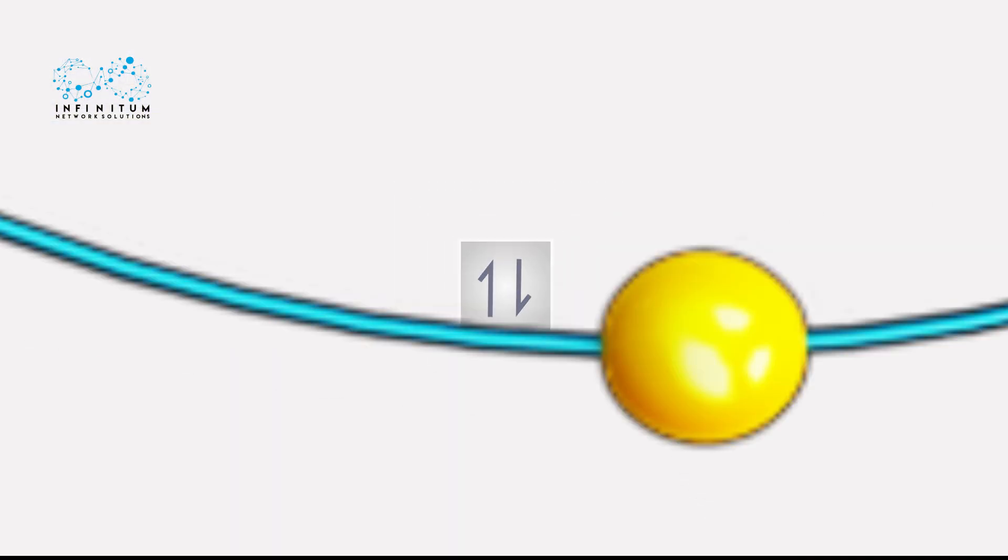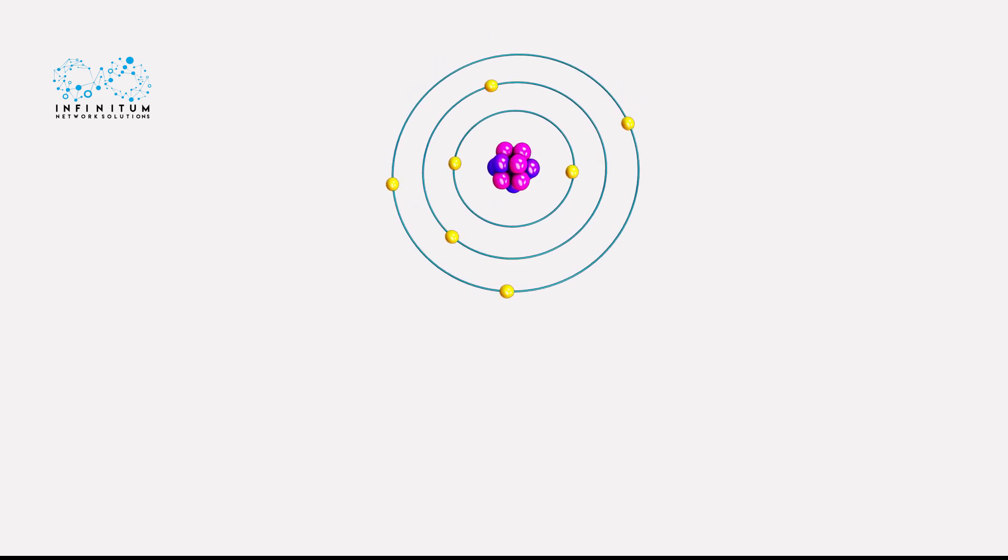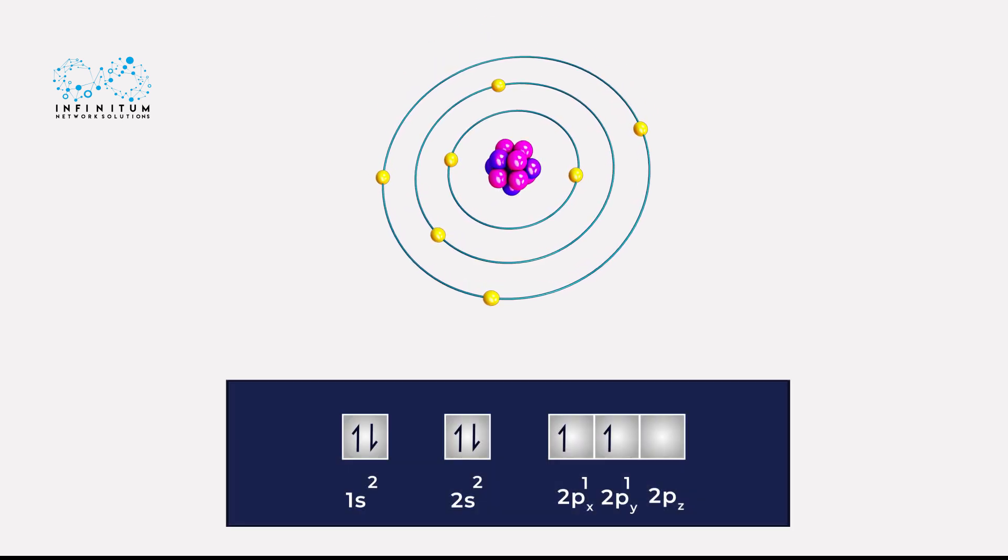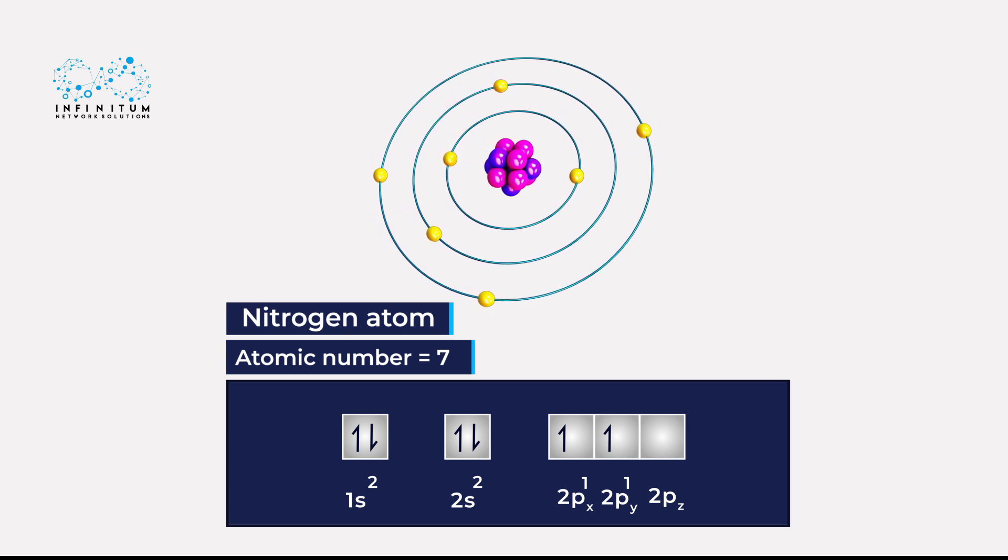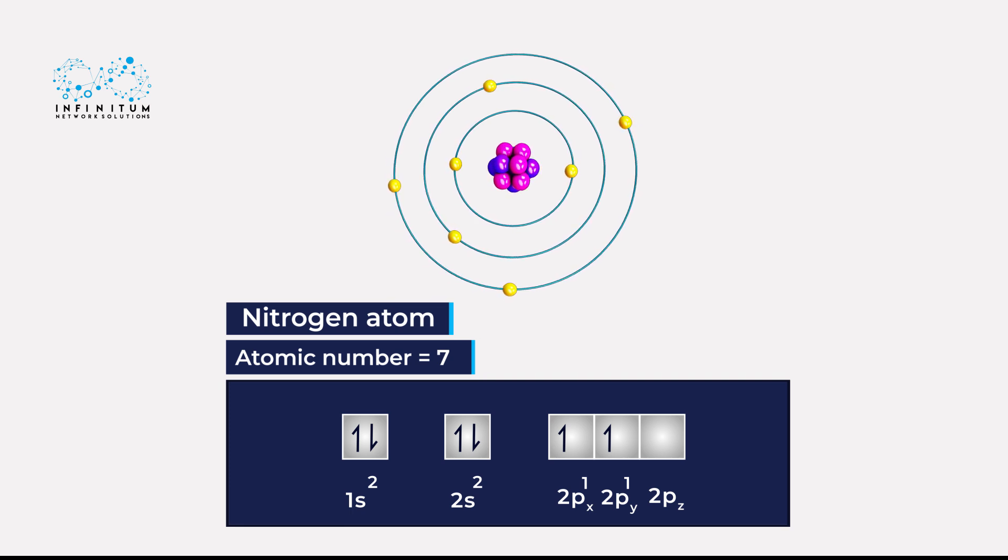Let's consider the nitrogen atom. It has seven electrons. The first six electrons have the same arrangement as that of carbon, which is 1s² 2s² 2px¹ 2py¹.